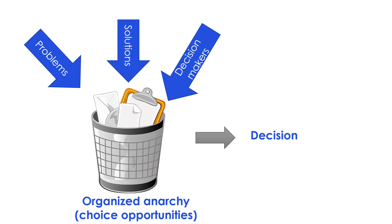The Garbage Can Model considers problems, solutions, and decision-makers as three independent streams, each generated separately and flowing disconnected from each other. These three streams only meet when the fourth stream — a choice opportunity — arises. A decision is generated depending on the speed at which the garbage is collected and removed from the can: how long before problems, solutions, and decision-makers move on to other choice opportunities, or how long the current choice opportunity remains available. For example, an unexpected crisis such as a pandemic occurs, and a decision is made in a rush without proper analysis or consideration of long-term consequences.